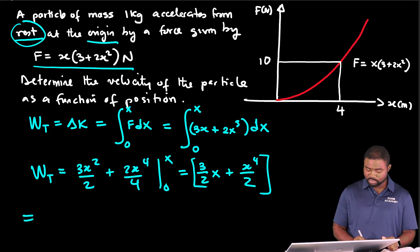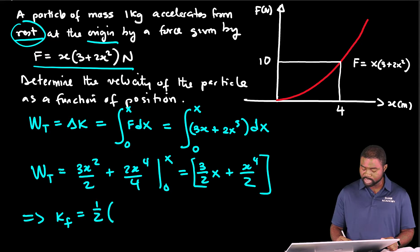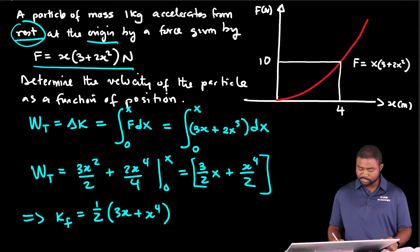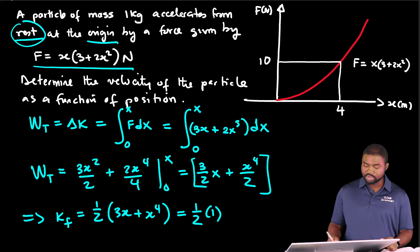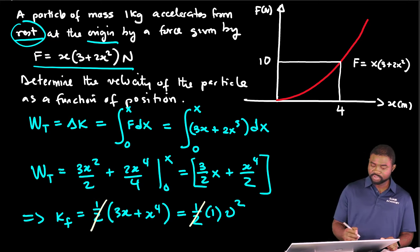In that case, we can conclude that the final kinetic energy equals 1/2(3x + x⁴). And this equals 1/2 times the mass (which is 1) times v². The halves cancel out.